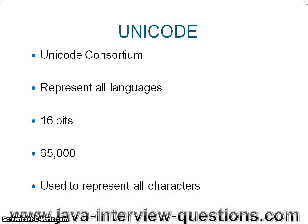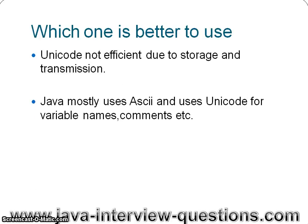As we've seen, ASCII uses seven bits per character. In Unicode, 16 bits are used for each character, and there are a total of 65,000 characters that Unicode supports. Unicode is used to represent all characters, and this is the main difference between ASCII and Unicode.